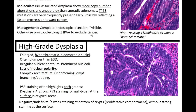In high-grade dysplasia, you'll see enlarged, hyperchromatic, pleomorphic nuclei — often more plump than in low-grade dysplasia — with irregular nuclear contours, prominent nucleoli, and loss of nuclear polarity. You can also have complex architectures such as crypt cribriforming, crypt branching, and budding. Compared to the well-behaved low-grade dysplasia, high-grade dysplasia looks much more disorganized and chaotic on a cellular level — a lot more turnover, replication, and cells acting aberrantly, representing a more worrisome process moving toward adenocarcinoma.